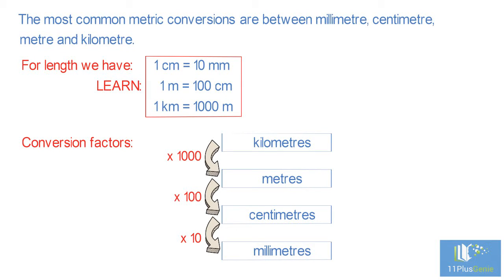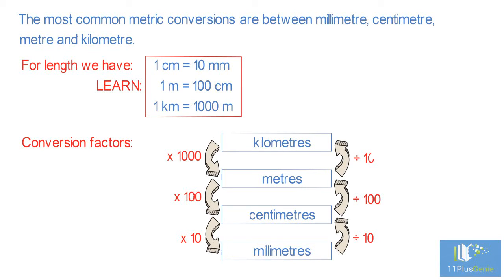The opposite is also true. To convert millimeters to centimeters, we divide by 10. To convert centimeters to meters, we divide by 100. To convert meters to kilometers, we divide by 1000.